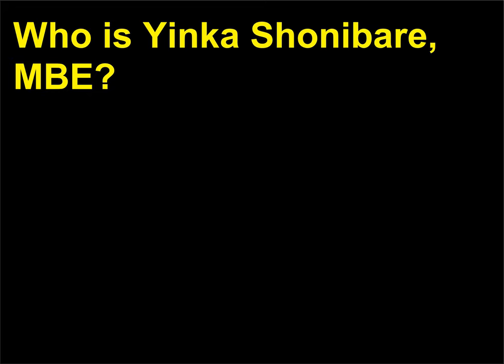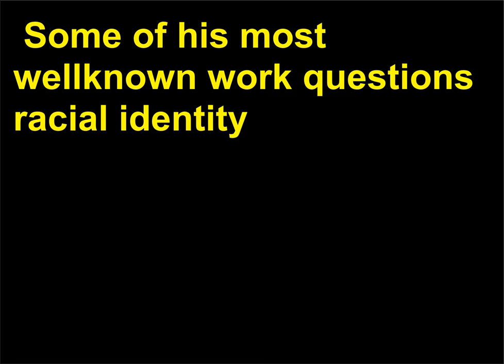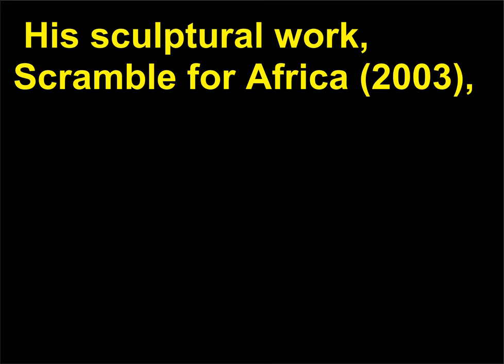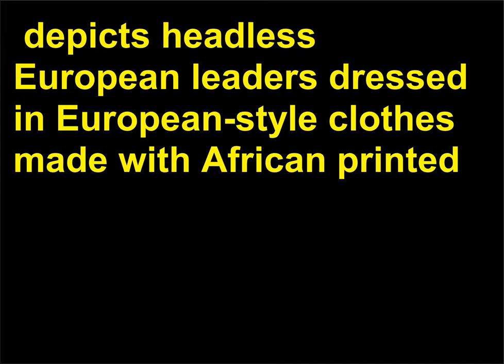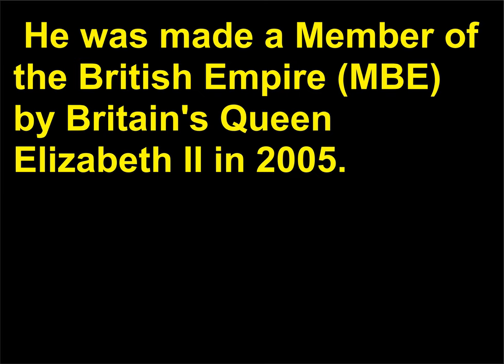Who is Yinka Shonibare, MBE? Yinka Shonibare, born 1962, is a British-Nigerian artist whose work takes many forms, including video, photography, installation, and performance. Some of his most well-known work questions racial identity and relationships between cultures in a post-colonial world. His sculptural work Scramble for Africa (2003) depicts headless European leaders dressed in European-style clothes made with African printed fabrics as they divide up the resources of the continent amongst themselves. He was made a Member of the British Empire (MBE) by Britain's Queen Elizabeth II in 2005.